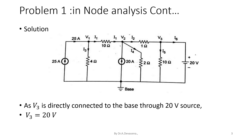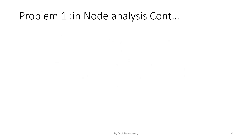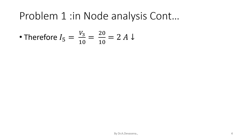V3 is equal to 20 volts. Therefore, I5 is equal to V3 by 10. That value is 20 by 10, which is equal to 2 amps. The direction of the flow of current is indicated in this diagram. Applying KCL at V1 and V2, we have the following equations.